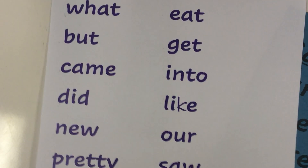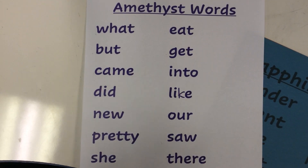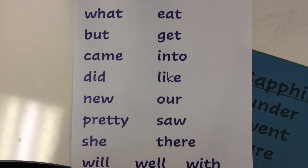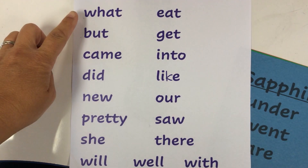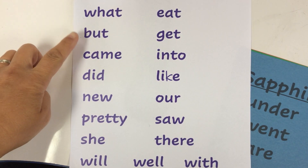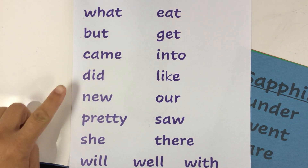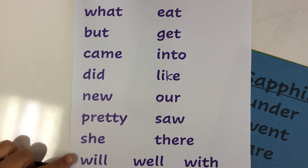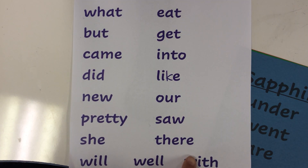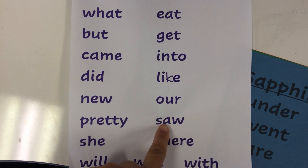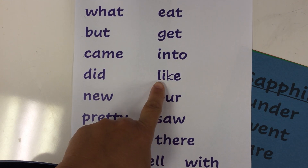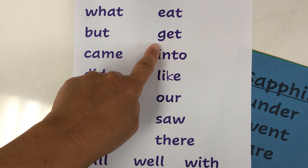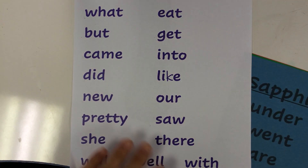All right, and then let's review our amethyst words. You should be a pro at these, right? Let's say them together: what, but, came, did, knew, pretty, she, will, well, with, there, saw, our, like, into, get, eat. Very good.